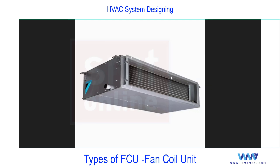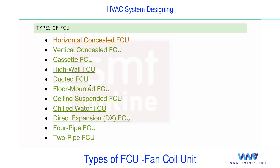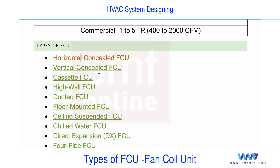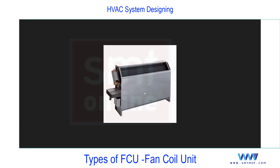The next type is the vertical concealed FCU. This is used when there is no space above the false ceiling due to site conditions or interior requirements. The unit sits vertically — often on the floor at the other side of a wall — and a small piece of duct connects it to a grille through which air is supplied into the space.